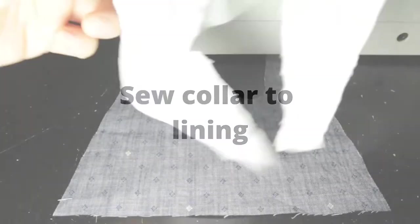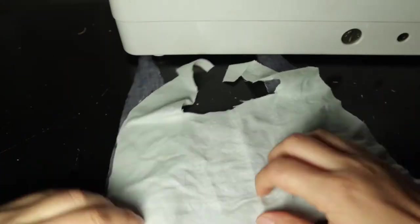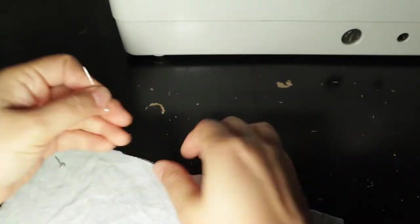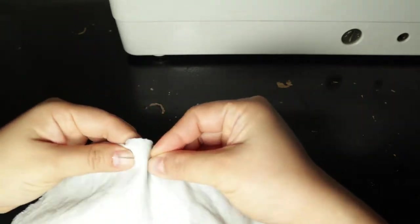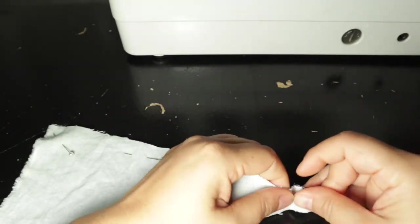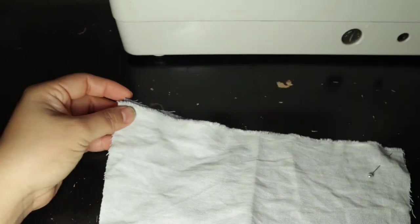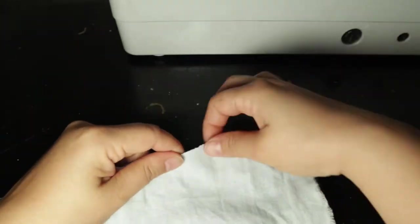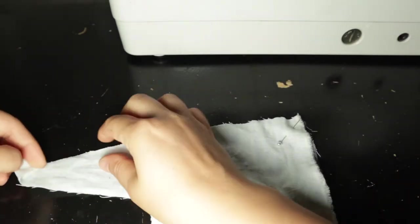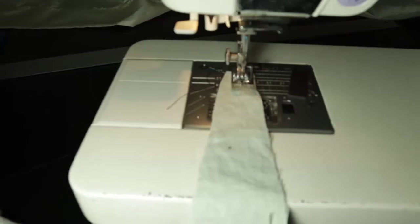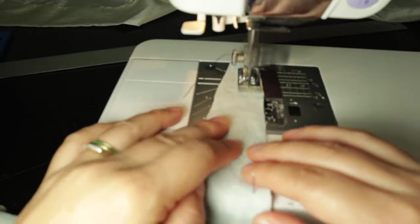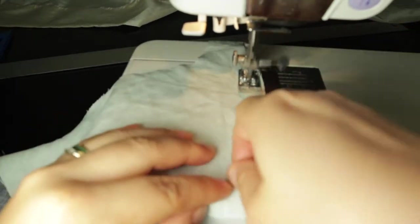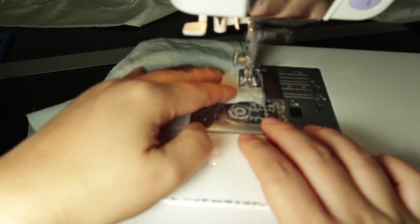So next we're going to sew the collar to the lining. We're not going to attach the facing yet. Here we're going to match everything up. The light blue is the lining. The dark blue is the collar. So we want the right sides together. We're going to sew a long outline at 3/8 of an inch from the loose ends. It's important as 3/8 of an inch for a reason. I'll tell you why later.